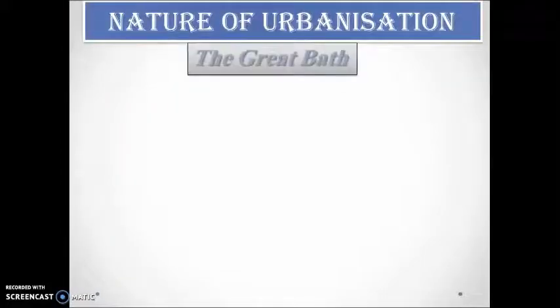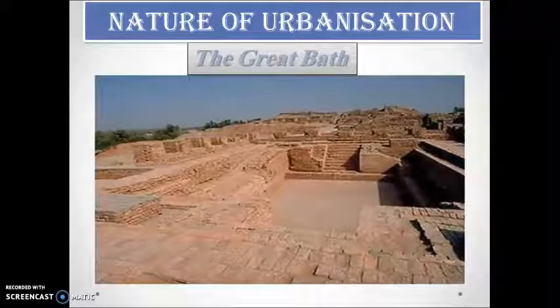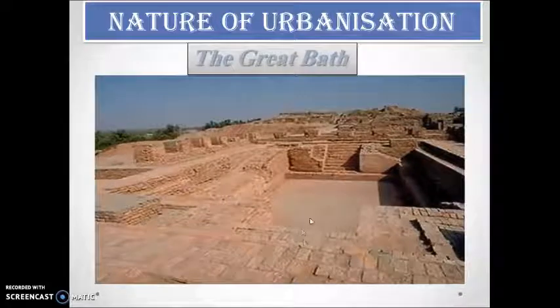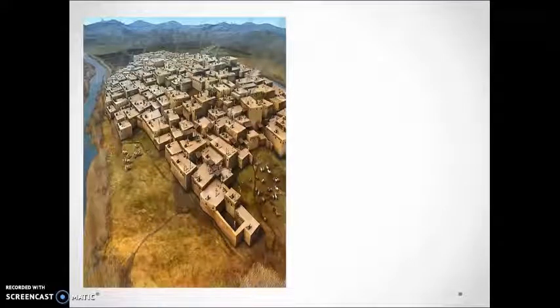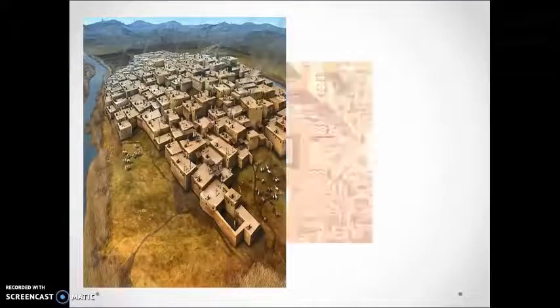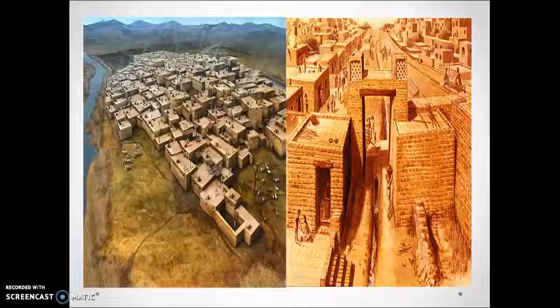Now you can have a look at the Great Bath of Mohenjo-daro — you can see the staircases going down into the tank. This is also the lower town, showing the grid pattern and how the houses were built. These reconstructions are based on the archaeological evidence we have. You can also see a view of the streets and drainage patterns.